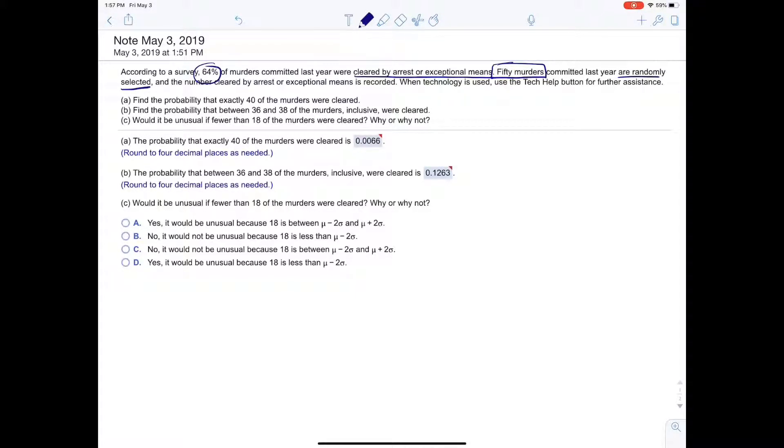We're curious about, for part A, what's the probability that exactly 40 of the murders were cleared by arrest or exceptional means? They were cleared, right? We could do that using binomial. We can just say binomial PDF, because it says exactly 40. So 50 is the sample size, 0.64, and then 40. So we're getting exactly.